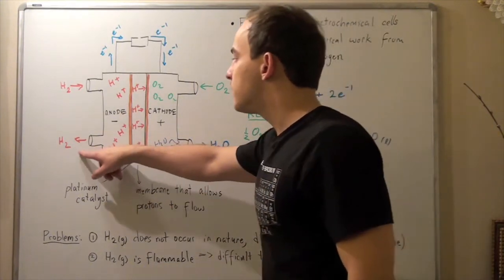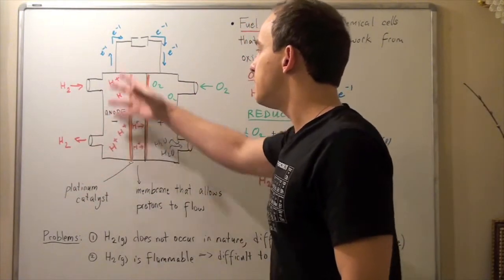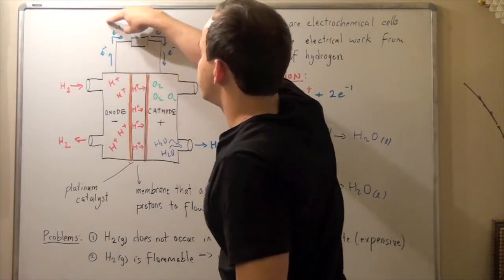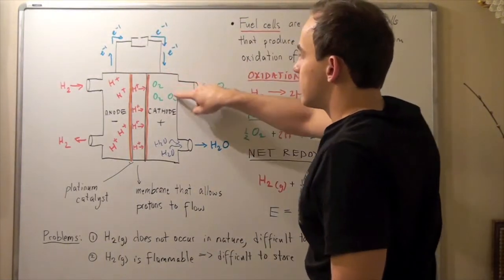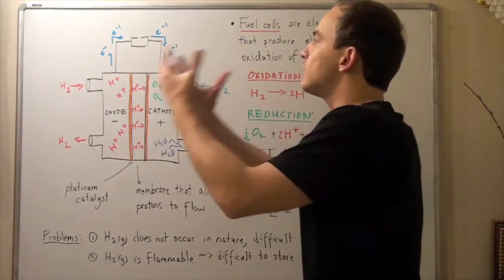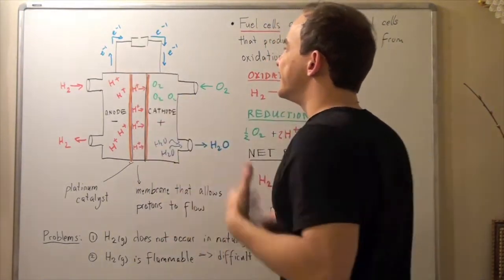But notice some of the diatomic H must leave because we can't have a pressure buildup in this system. So now we have the two electrons traveling all the way to this cathode. When it travels through this guy, this provides electricity to some outside source. This is where the electrical work is done.